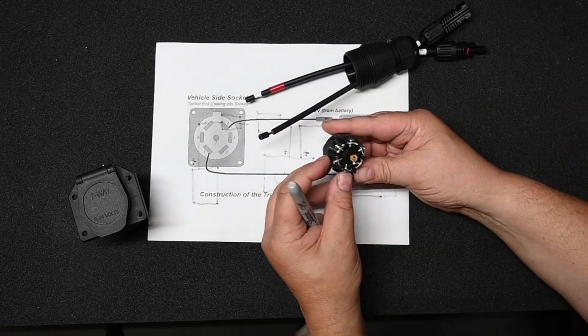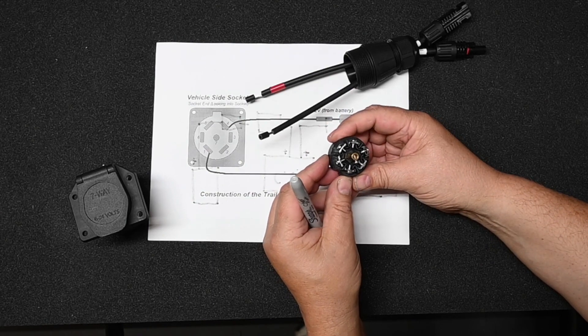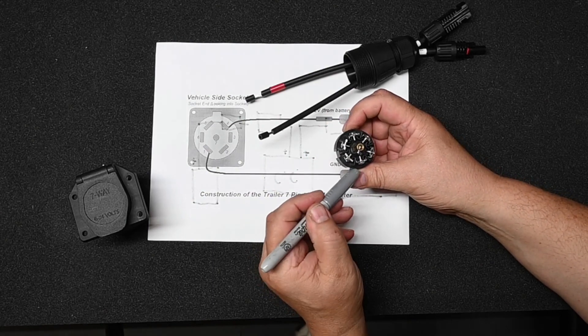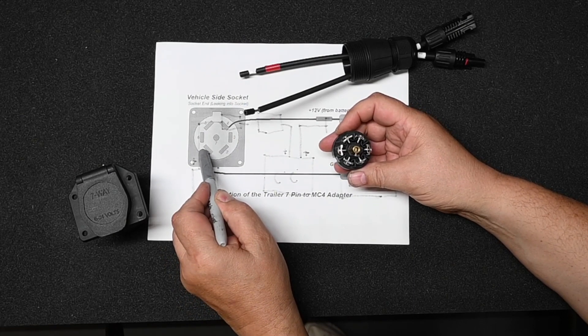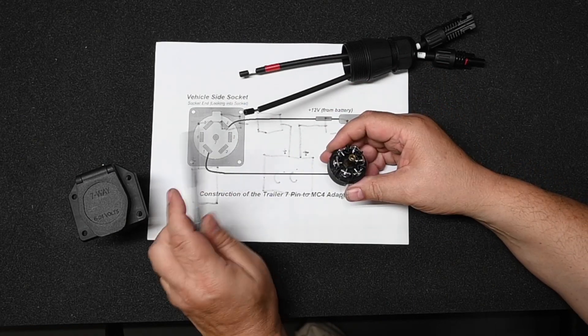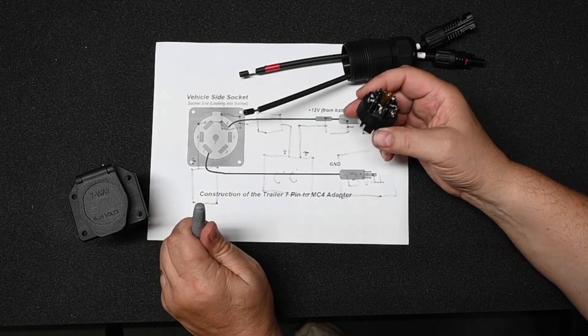And then on this particular connector, and it's a little bit hard to see, we have both a number and the function. So we want to locate number one, which is ground, and number four, which is 12-volt battery.